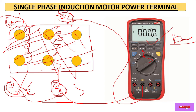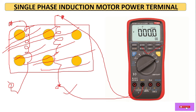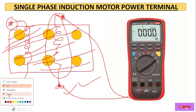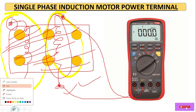If it does not make a beep sound, that means these two are not terminals of the same winding. We change the probe position, keeping the common terminal the same, and check again. If it makes a beep sound, that means these two are terminals of one winding. Similarly, we can find the other pair. So after this step we have identified the two windings, but we still need to identify which one is running and which one is starting.